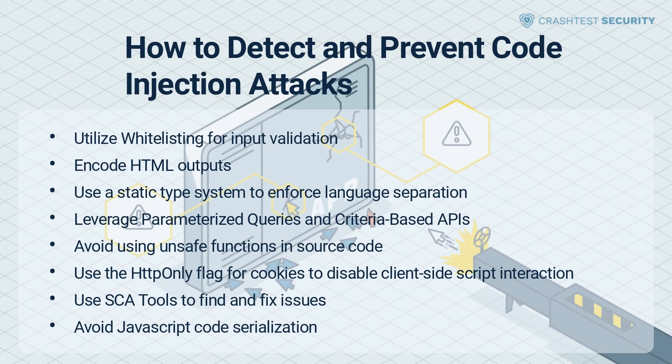Best practices to prevent code injection attacks. While use cases differ for different organizations, some best practices to eliminate code injection flaws in modern web applications include: utilize whitelisting for input validation. Whitelisting is simpler to set up and gives security teams stricter control over what data or types of input the application can process, thereby helping to reduce the risk of an attacker executing malicious code.